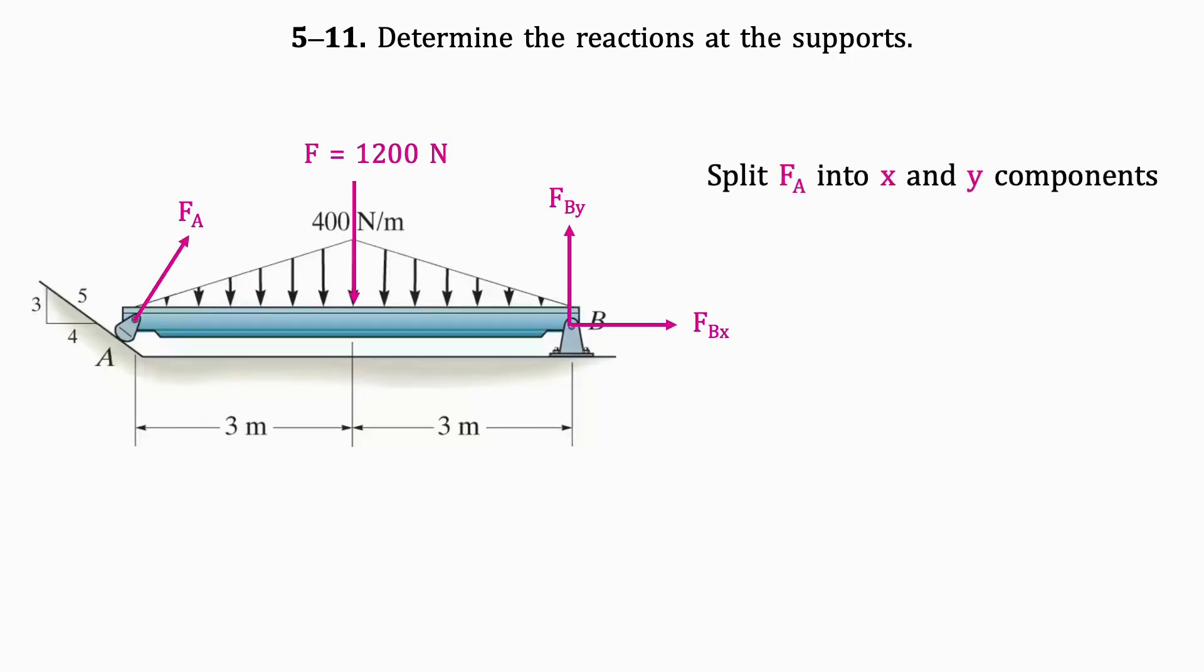Now we'll split force A into X and Y components using the given angle ratio. If we redraw this given angle ratio, we can manipulate the ratio to get that sin θ equals 0.8 and cos θ equals 0.6.